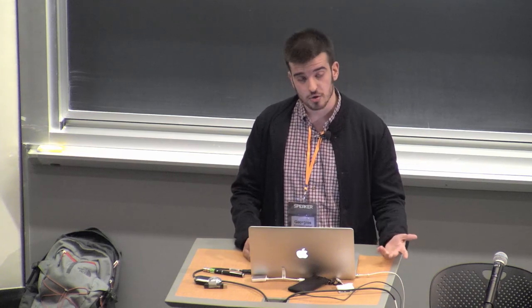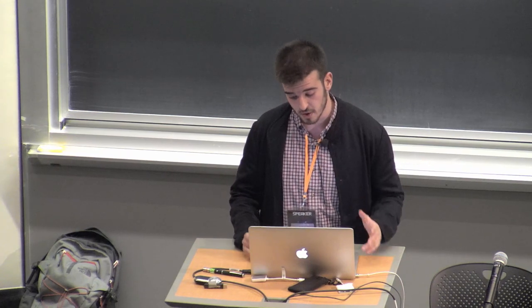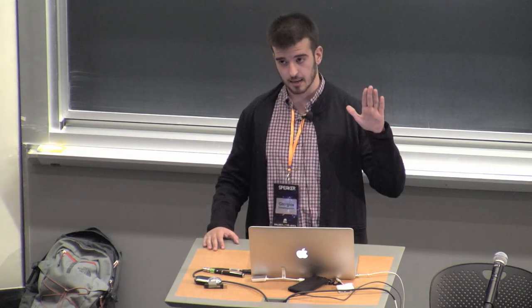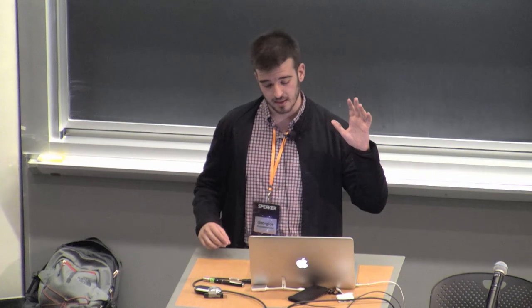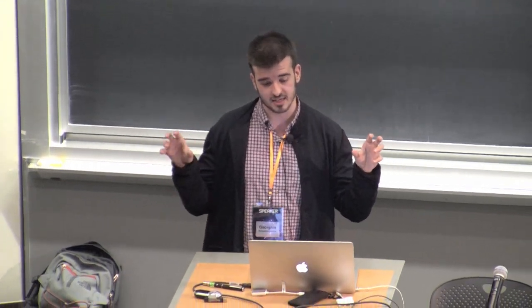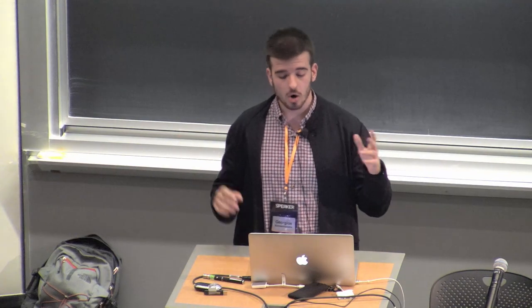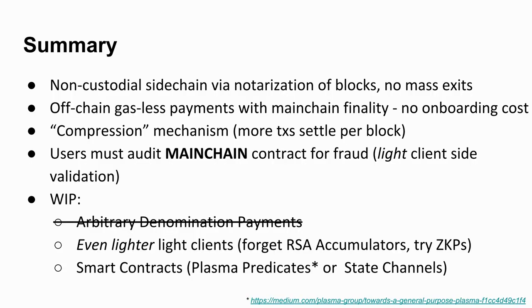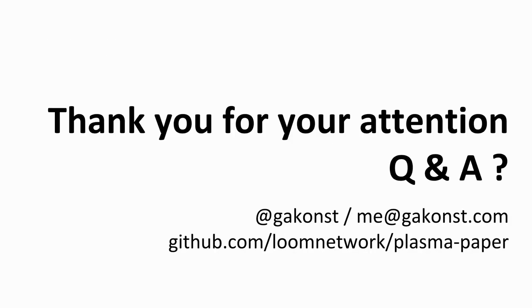Finally, we may want to do smart contracts. I'm a big fan of doing state channels on top of Plasma, which are possible with high probability using just a multi-sig and hash-and-timelock transactions, or a recent construction which essentially provides customizable exit games per coin, per transfer, giving more flexibility on the spending conditions of your UTXOs. Thank you for your attention, and I'm happy to take any questions.